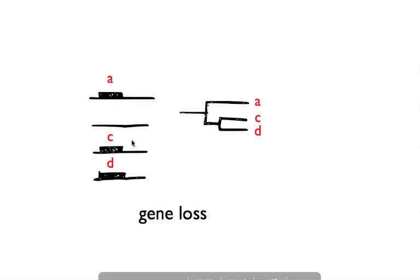Gene loss. If the species B loses its gene we're looking at, then we won't see it in a tree. So we'll see A, C and D, and we'd interpret that the gene was lost in B.